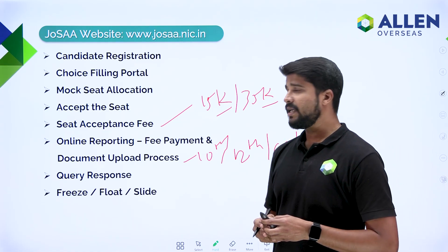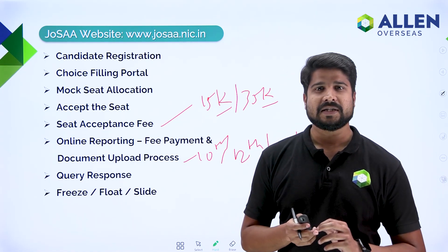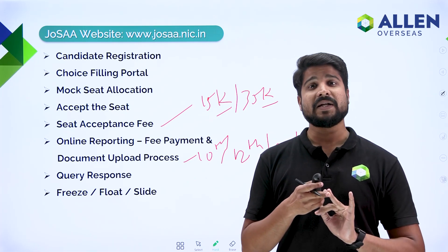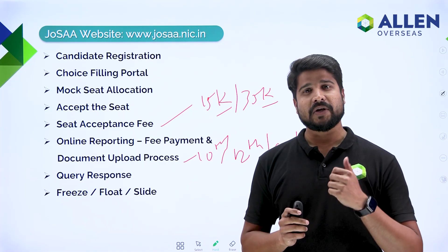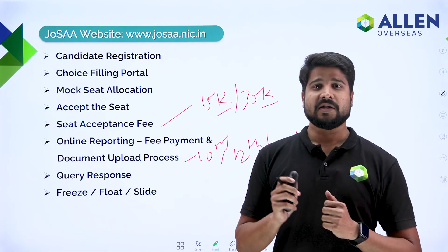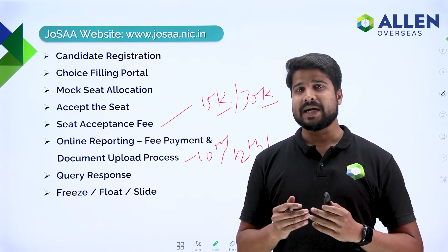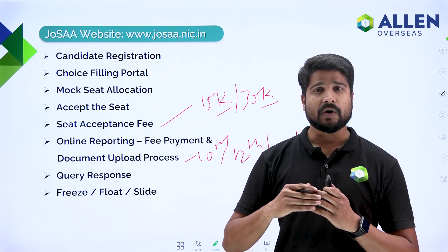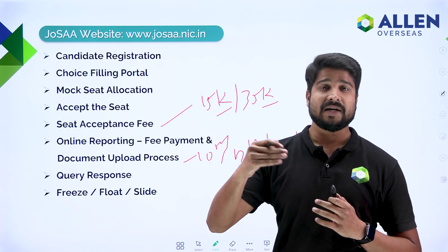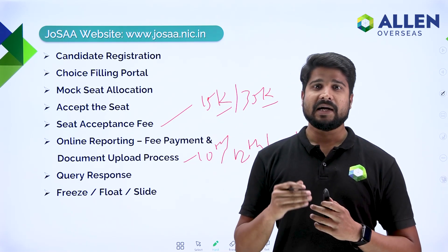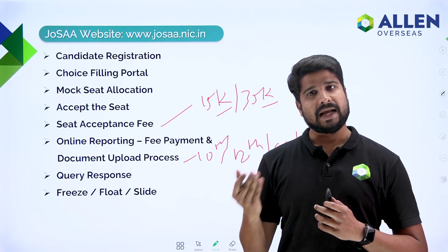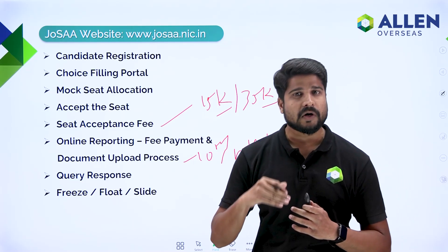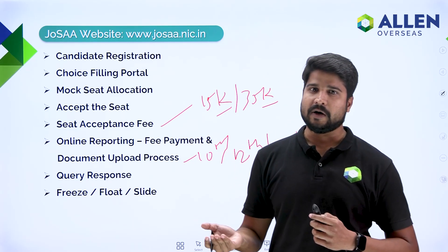The last option is freeze, float, and slide. These are the willingness options. If you want to accept the seat allotted to you under any round, you will select the freeze option. The float option means if you get a seat allotment and want to upgrade your branch or seat inter-college, you select float. And if you want to upgrade your seat within the same institute or same college, you select the slide option.